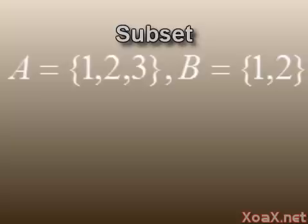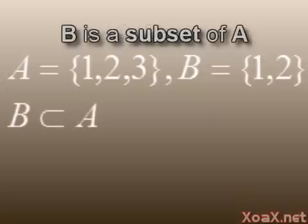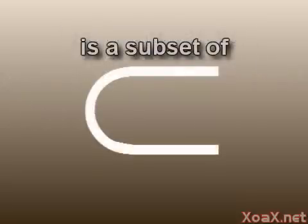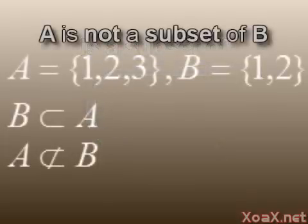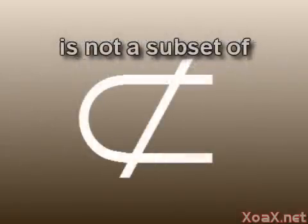Given two sets, we will specify that one set is a subset of another set if all the elements of the first set are elements of the second set. In this example, B is a subset of A. We use this symbol to indicate that B is a subset of A. A is not a subset of B, however, and we denote this by using the subset symbol with a strike through it.